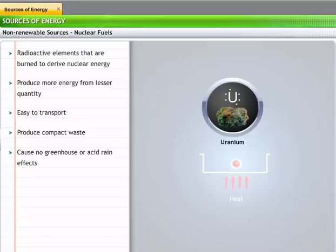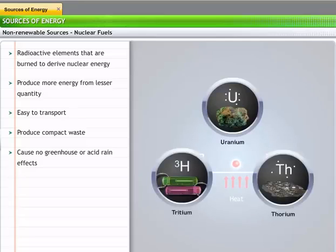Uranium is the most commonly used nuclear fuel for generation of electricity. Tritium and plutonium are the alternative nuclear fuels.